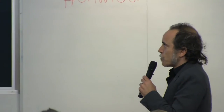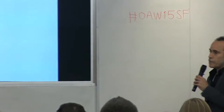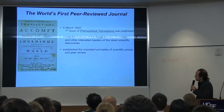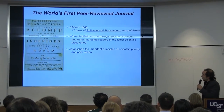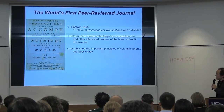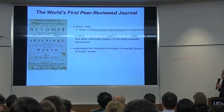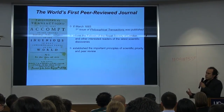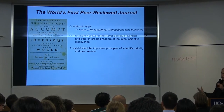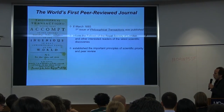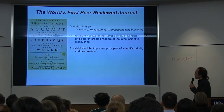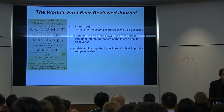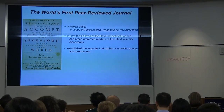Peer review more or less began about 350 years ago with the first formal journal, The Philosophical Transactions of the Royal Society. In this early effort to organize scientific thought into a journal, we have the establishment of some important principles about scientific priority, what work is important, and we set forward this idea of peer review.